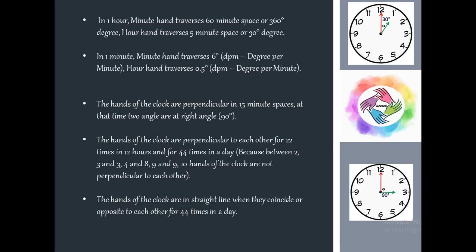In one hour, the minute hand passes 60 minute spaces, completing a full circle. The hour hand traverses 5 minute spaces or 30 degrees in one hour. So when it is 1 o'clock, if we track the minute hand it goes around the full circle — 360 degrees — while the hour hand moves only 30 degrees.